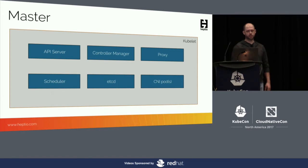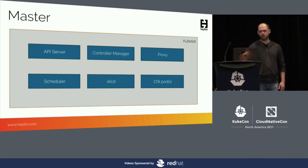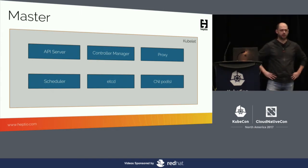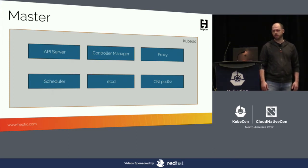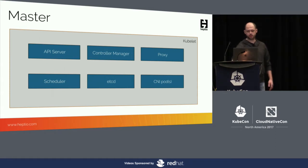Within the master, we have the Kubernetes API server — the entry point for creating or fetching information about Kubernetes state. We have a scheduler, which is responsible for deciding which nodes pods should run on. We have a controller manager, which runs the core control loops to constantly push the state of the cluster towards the desired state. And then we have etcd, our persistent store of state information for Kubernetes, as well as CNI pods and kubeproxy for networking and communication.